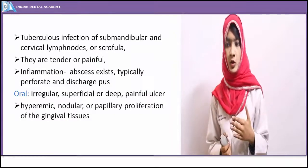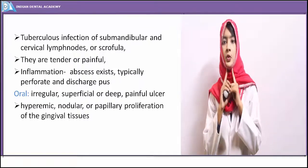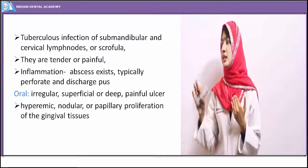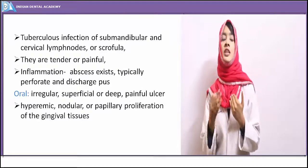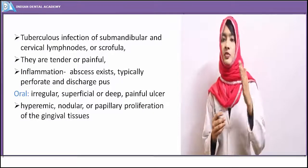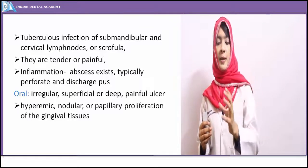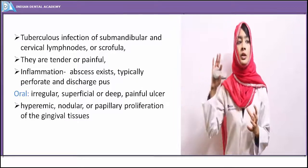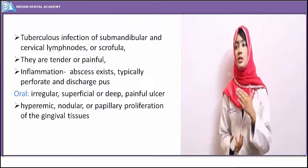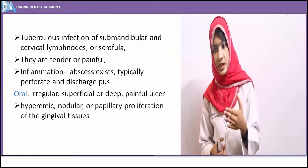When tuberculosis involves the submandibular and submaxillary lymph nodes, this is called scrofula. The lymph nodes become enlarged and very painful, leading to abscess development, which ultimately discharges pus on the external surface.